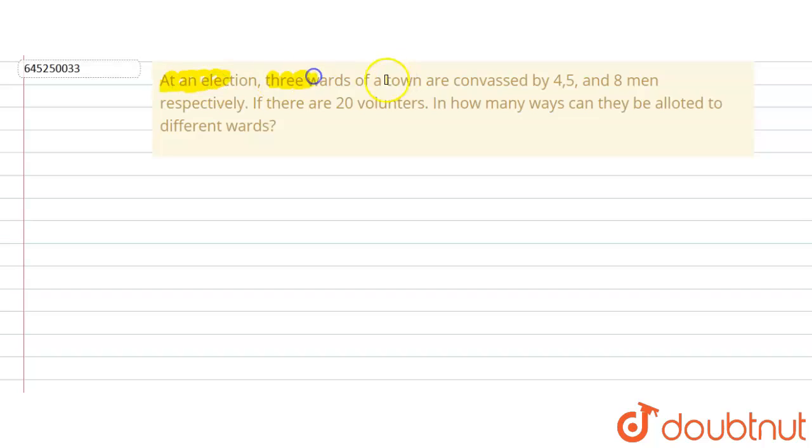In this question, we're given that in an election, three wards of a town are canvassed by four, five, and eight men respectively. If there are 20 volunteers, in how many ways can they be allotted to different wards?